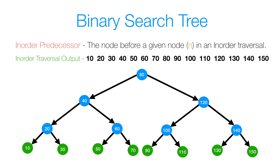Now let's look at the in-order predecessor. Given a node n, the node that comes before it in an in-order traversal is going to be that node's in-order predecessor. So if you look at our output — 10, 20, 30, 40, 50, all the way up to 150 — if you pick any value, for example 110, its predecessor is going to be the value that comes right before it, so it's 100. If you pick 80, its predecessor is 70. If we picked 150, its predecessor is 140.